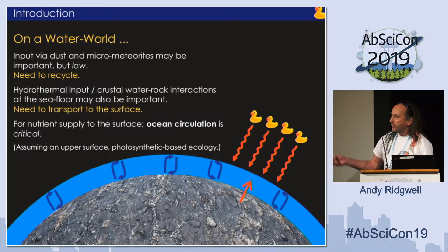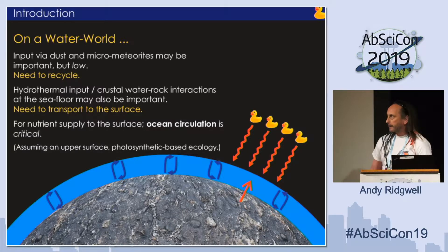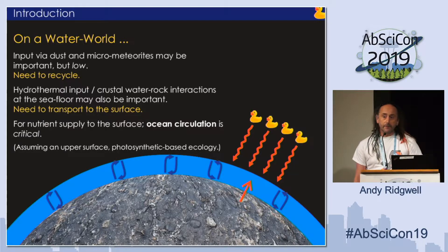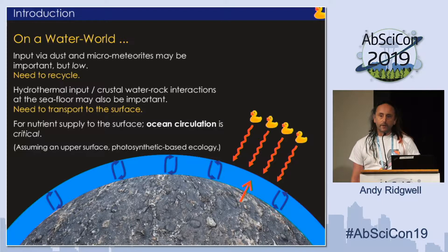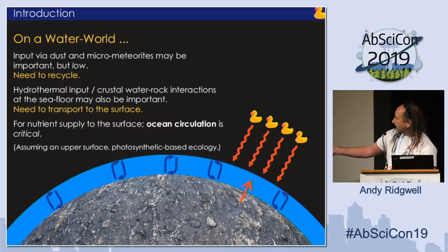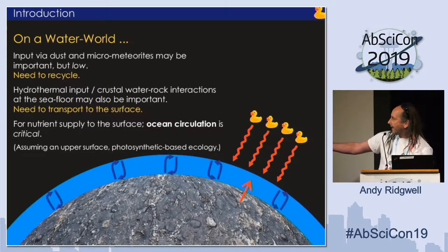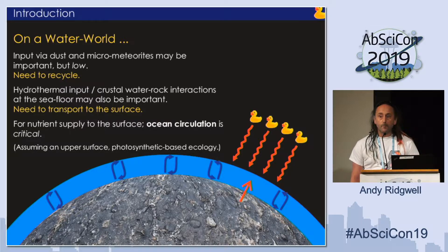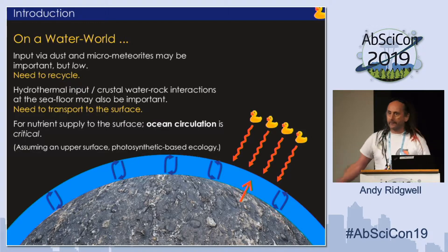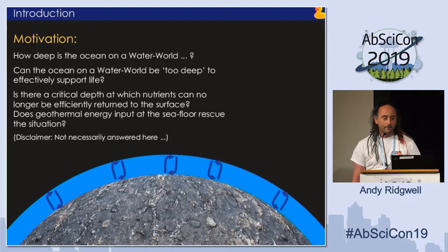On a water-only world, you don't have the luxury of land and weathering and supply of fresh nutrients. There will be some supply of dust and micrometeorites being ablated in the atmosphere, but this is pretty small on Earth today compared with weathering. You may have release of nutrients from the ocean floor from hydrothermal systems, but that's at the bottom of the ocean — you've got to get this back up to the surface. On an ocean world even more than today, it's critical that the ocean mixes pretty well. You want materials released at the ocean floor to be efficiently moved to the surface so they're available to photosynthetic life, and you want an ocean circulation that moves things around quite nicely and efficiently.